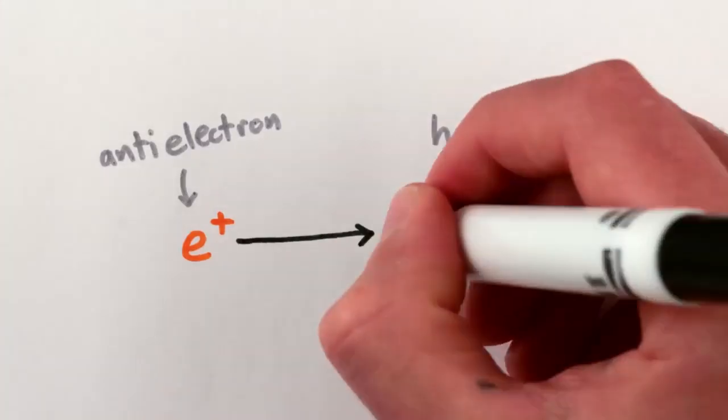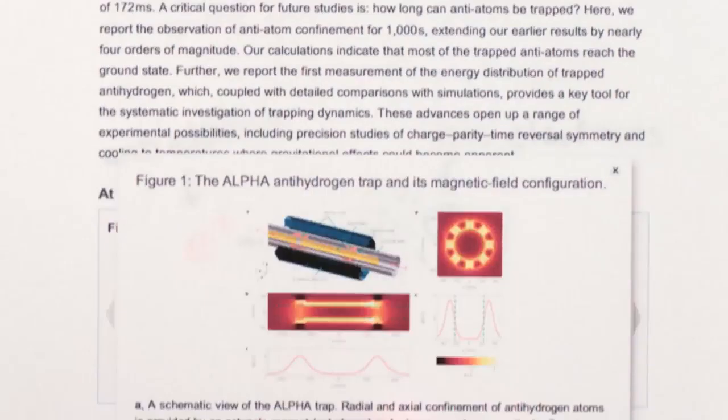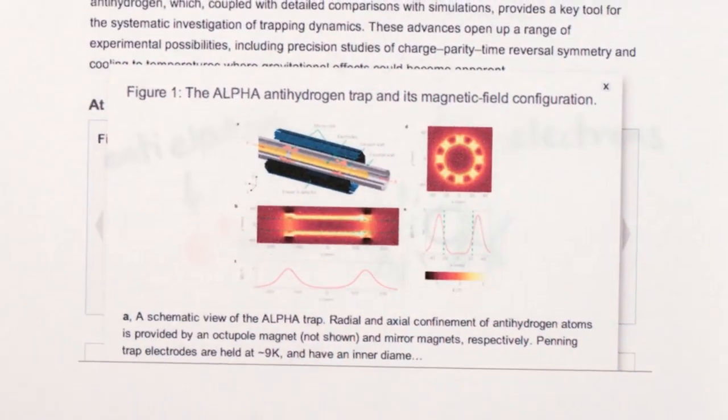Because every particle of antimatter annihilates with regular matter upon meeting, it's really hard to make anything big out of antimatter. At this point, we're still only able to make and contain a few hundred anti-hydrogen atoms at one time.